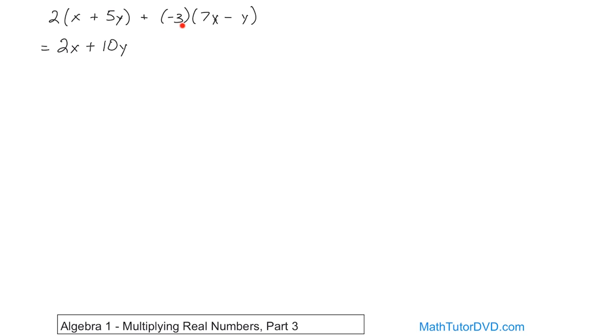Now here's where we have to be careful. We have negative 3 times positive 7x. Negative times positive gives us negative, so we have to put negative. 7 times 3 is 21, and the variable x comes along for the ride.